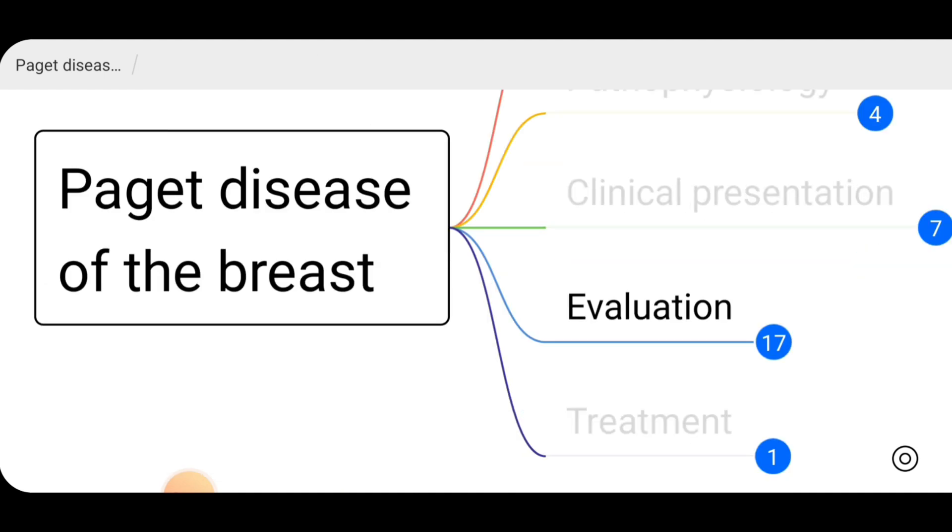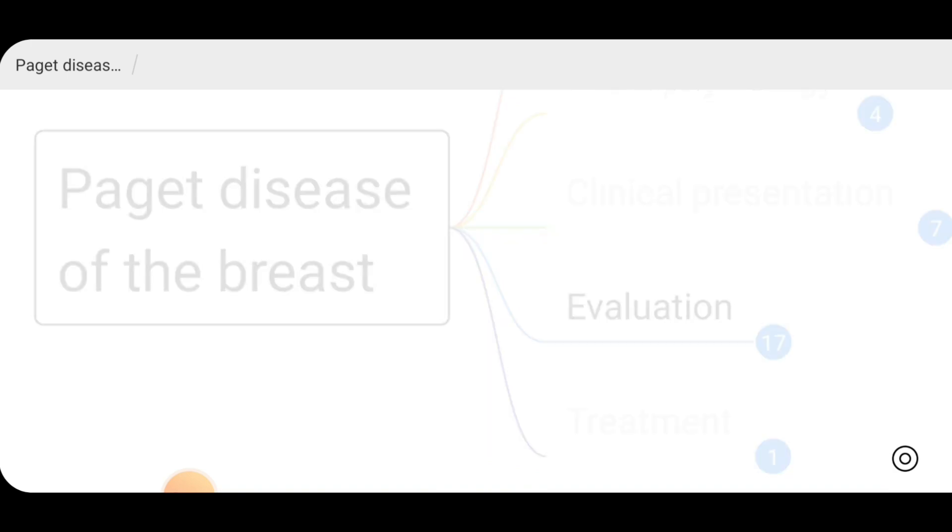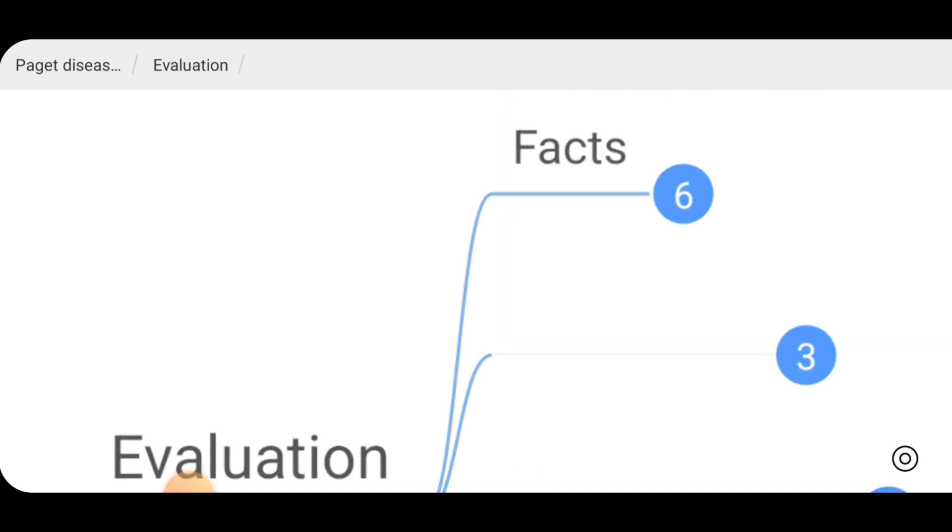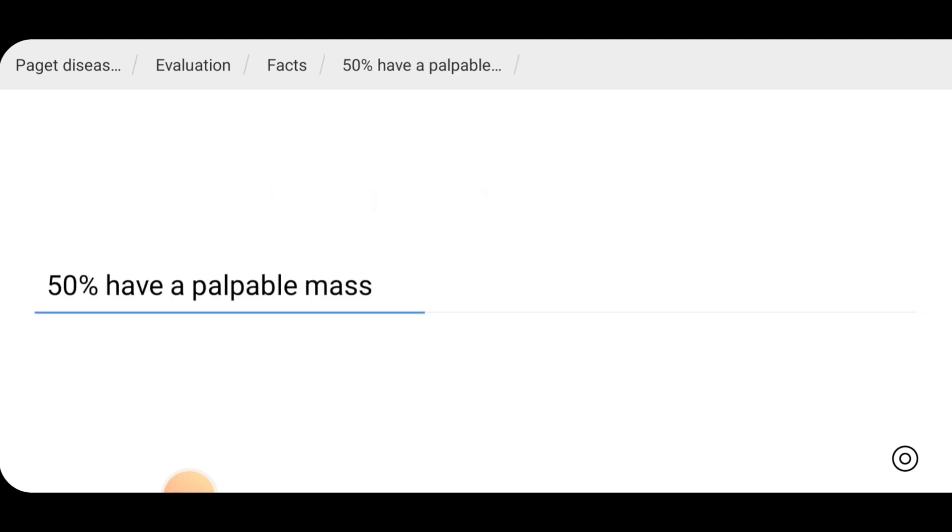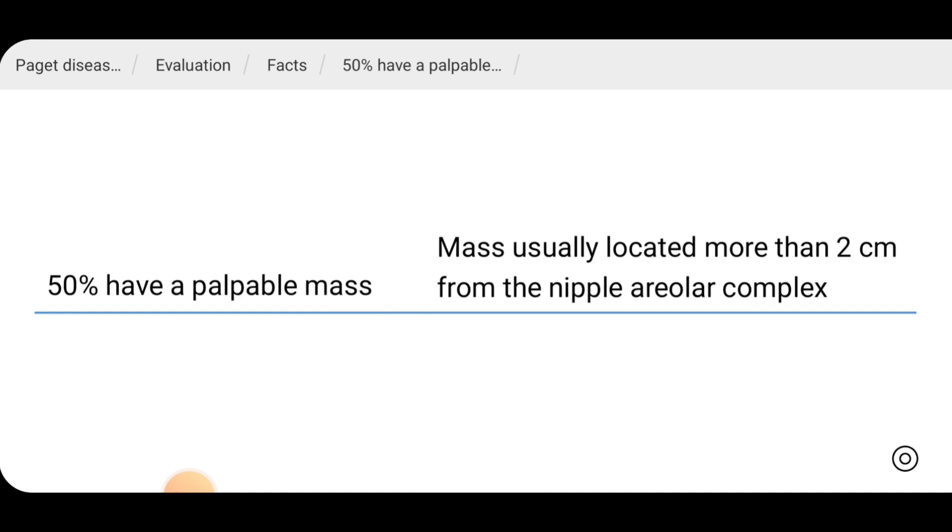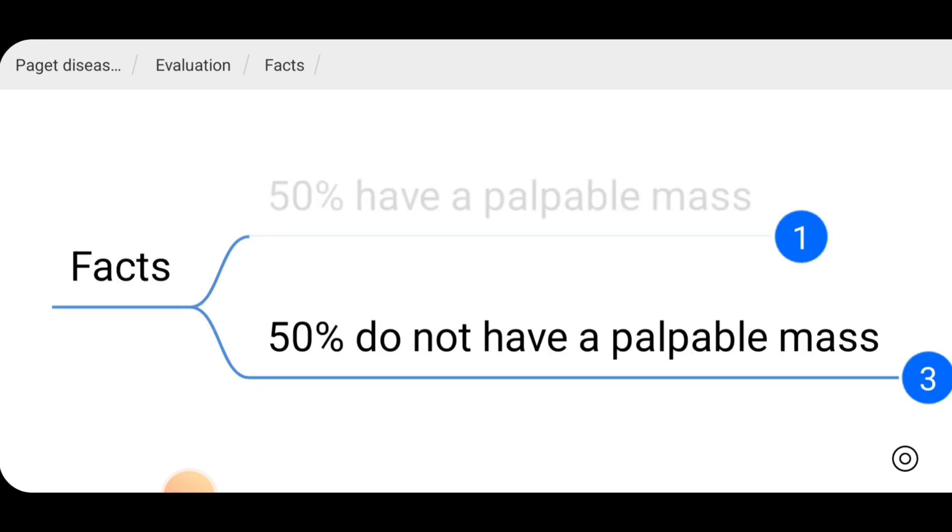How we can evaluate a patient suspected to have Paget's disease? We need to know few facts regarding this. 50% of the patients who are having Paget's disease have a palpable breast mass. This mass is usually located more than 2 cm from the nipple areola complex.